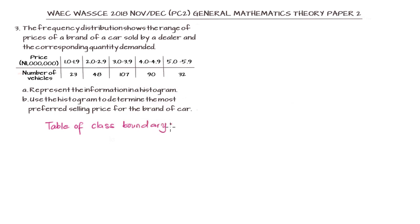For us to draw a histogram, we need to get a table of class boundary. The class boundary will feature the upper class boundary and the lower class boundary. If you are to express this information on the table, we have the price in millions of naira and then we have the class boundary from lower class boundary to upper class boundary.